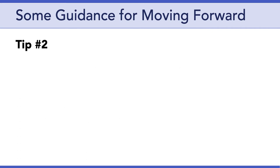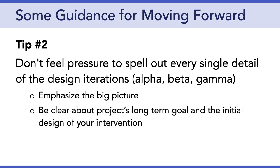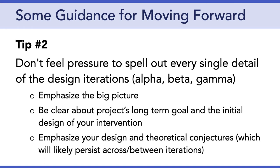Tip number two: don't feel pressure to spell out every single detail of the design iterations for alpha, beta, and gamma testing. Again, emphasize the big picture and be clear about the project's long-term goal and the initial design of your intervention. I want you to emphasize your design and theoretical conjectures, which will likely persist across and between iterations. Don't get bogged down in those details — keep things high level and focus on the big picture.